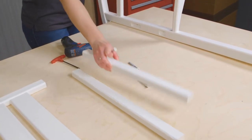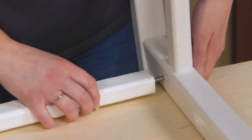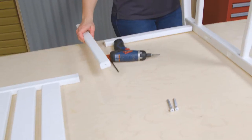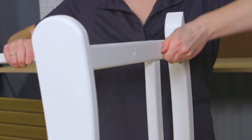Attach the short brace to the back of the right side frame using one 3-inch screw. Attach the long brace to the front of the right side frame using one 3-inch screw.